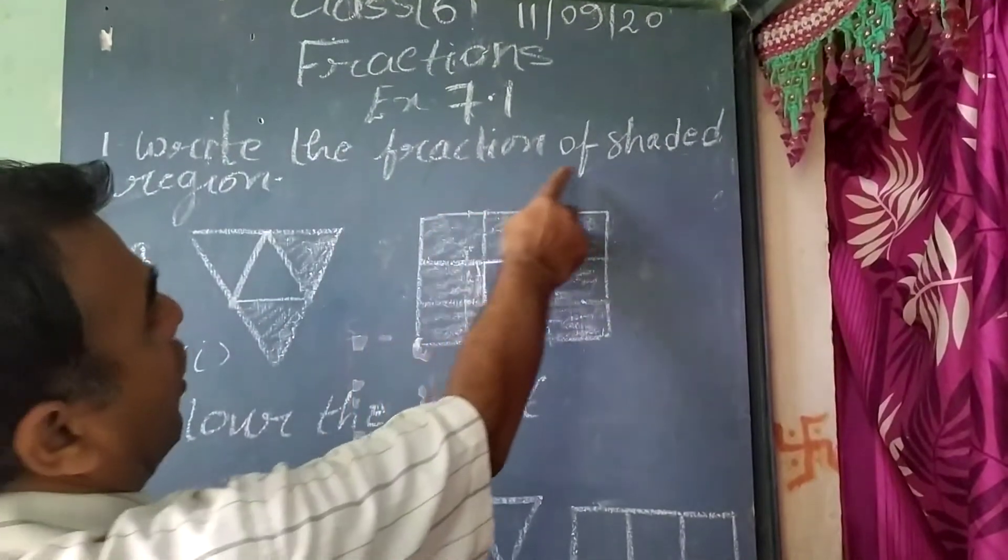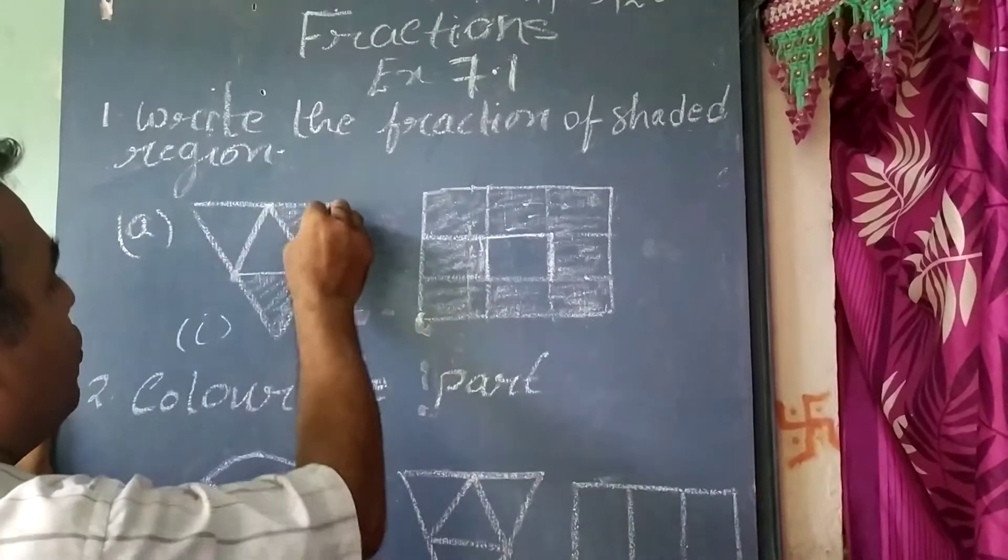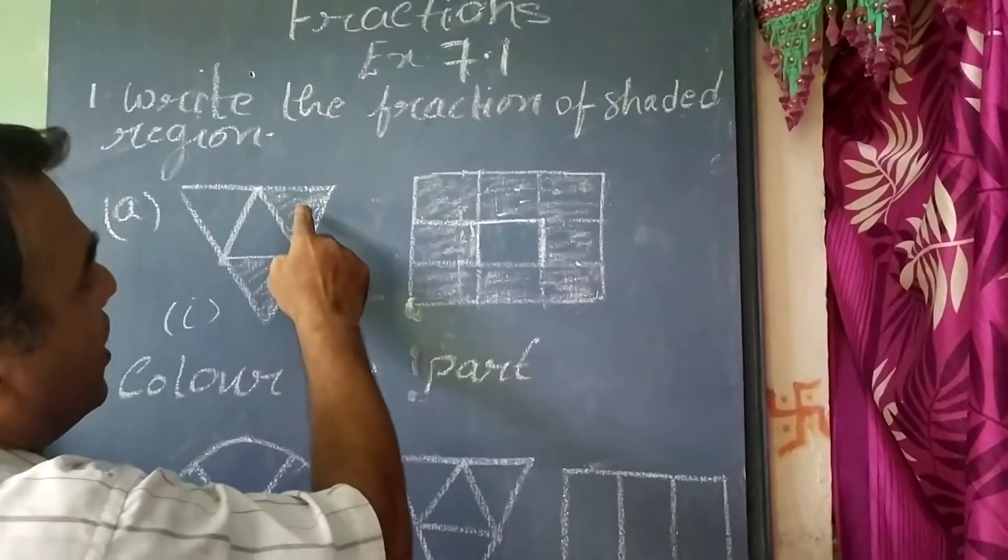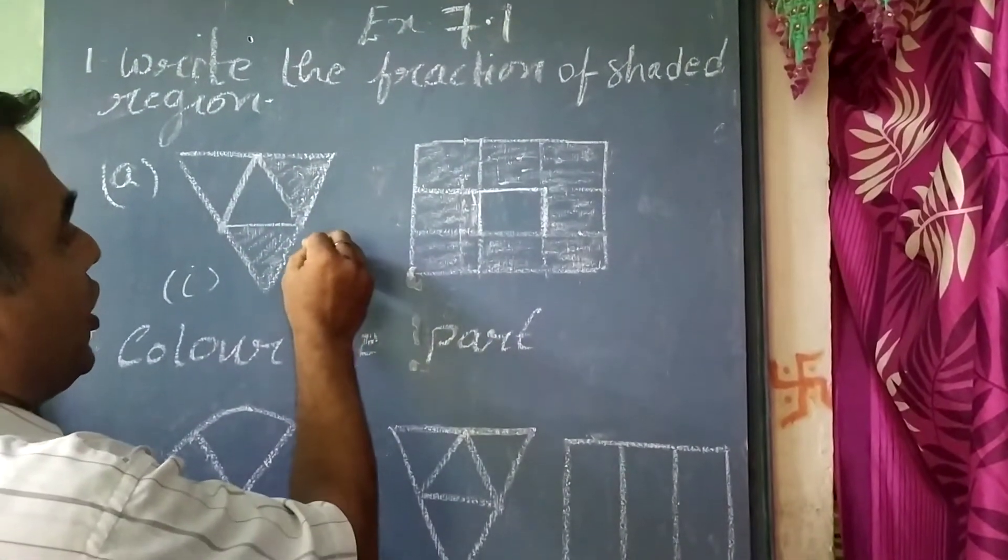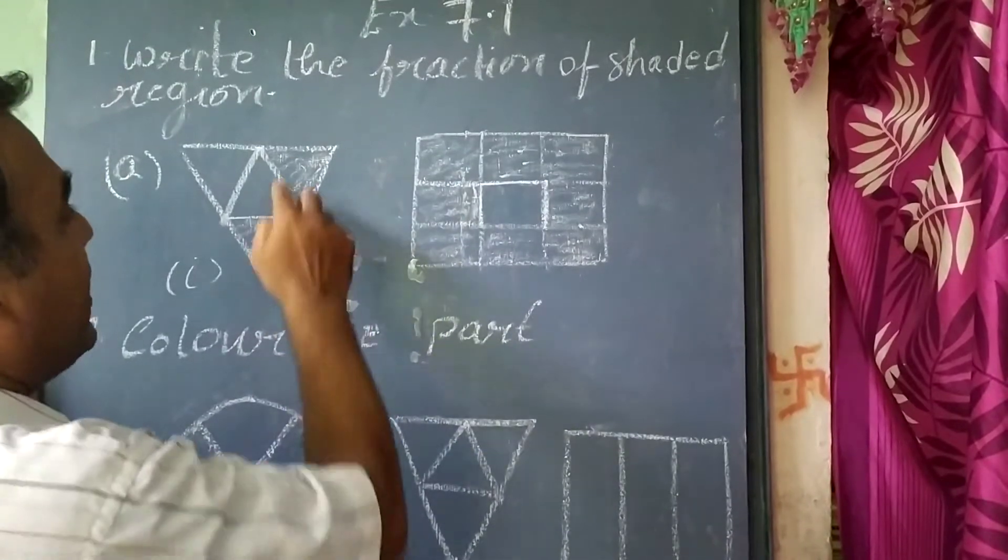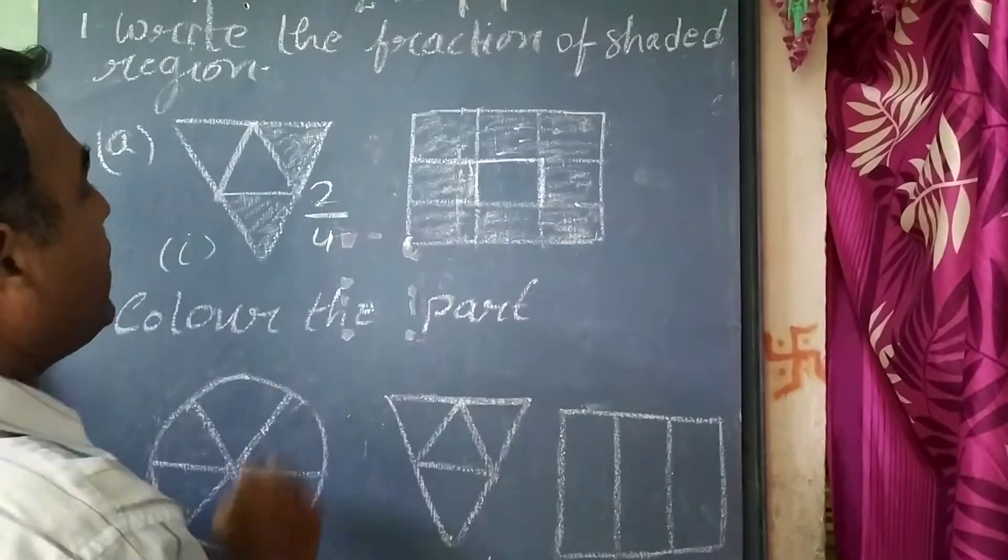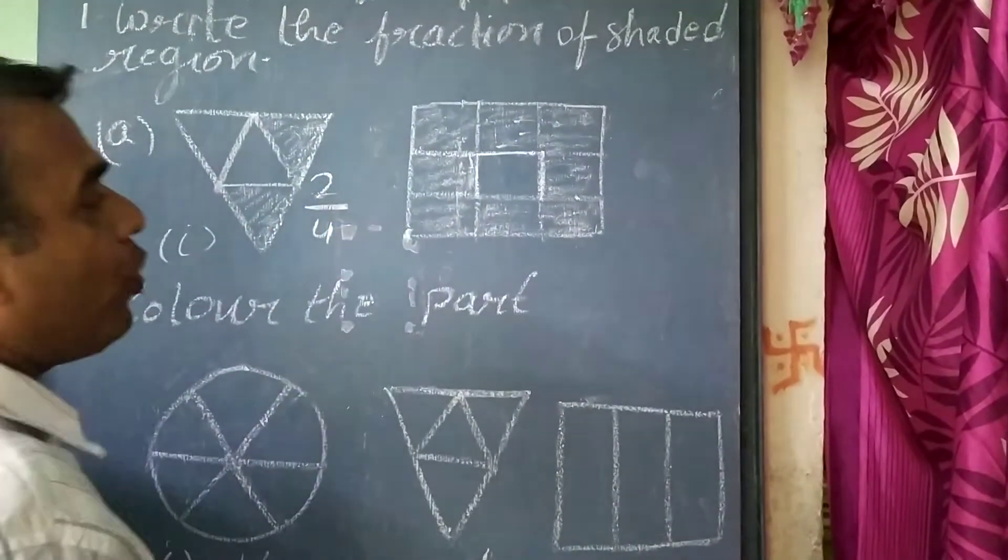Write the fraction of the shaded region. Question number A: the shaded region is 2. Here in the bigger triangle, there are 4 triangles. We will write 4 in the denominator and the shaded portion in the numerator. That is 2 by 4. The answer is 2 by 4.